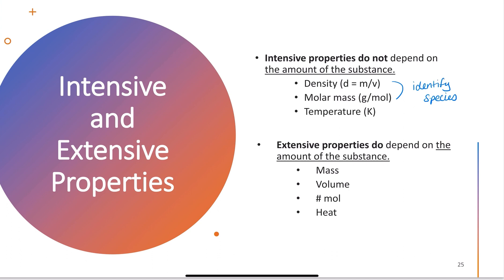Density is mass over volume. As I increase the mass, the volume also increases, so density can be used to identify something. Density is temperature dependent because volume is temperature dependent — we'll talk about that in a future chapter.